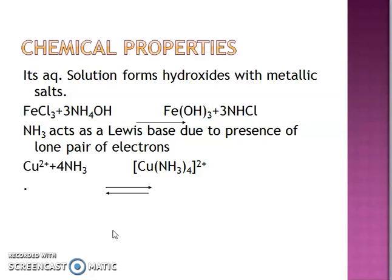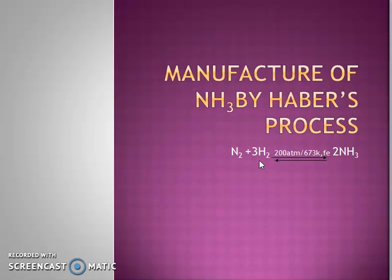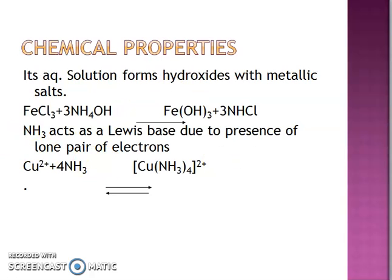Next, chemical properties — some questions are asked here. For example, NH3 reacts with metallic salts like FeCl3 or SnCl2 to form metal hydroxide such as Fe(OH)3 and NH4Cl. Please note the reaction correctly — it is NH4Cl that is formed. This type of question definitely comes in exams.